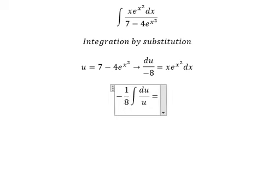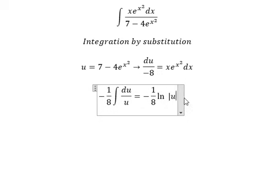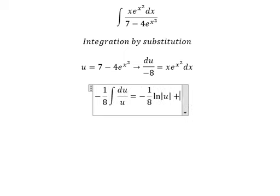So we get negative 1 over 8 ln of the absolute value of u plus C.